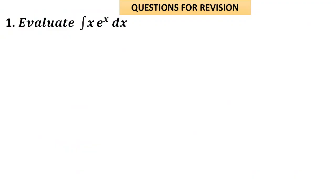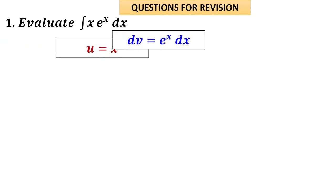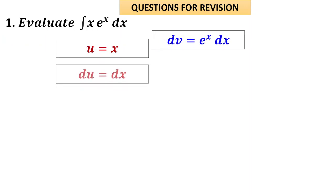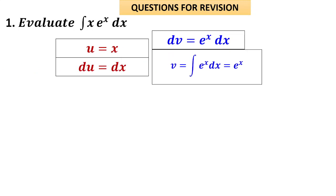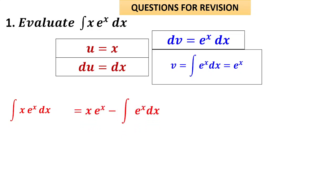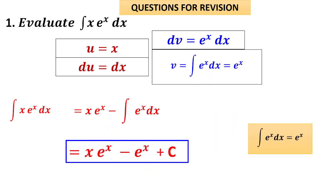Problem 1: integral of x·eˣ. Take u = x, dv = eˣ dx, so du = dx and v = eˣ. Applying the formula: u·v − integral of v·du gives x·eˣ − integral of eˣ dx. Since the integral of eˣ is eˣ, the answer is x·eˣ − eˣ plus c.